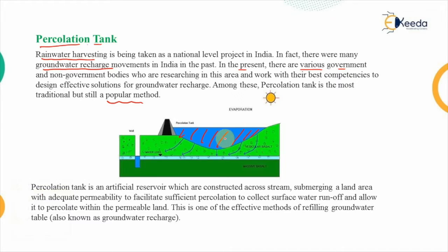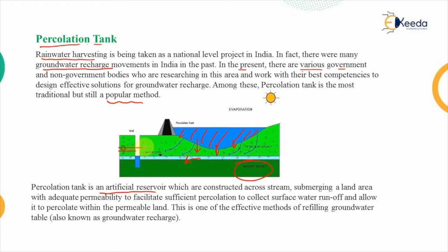As you can see, the blue shaded area represents the percolation tank. It is an artificial reservoir constructed across a stream. It submerges a land area with sufficient permeability so that percolation of water may take place. This percolated water adds to the groundwater and recharges it, slowly increasing the groundwater level. That is why this is a technique for groundwater recharge and water harvesting.